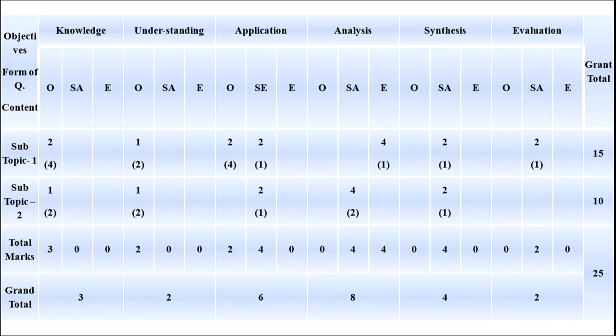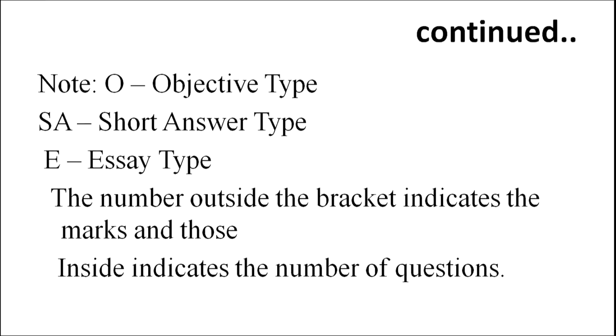What is a blueprint? A blueprint is a three-dimensional chart giving the placement of objectives, content, and form of questions. Here is a blueprint in which questions, number of questions, and marks are distributed. The abbreviation O stands for objective type questions, SA for short answer type, and E for essay type. The number outside the bracket indicates the marks, and those inside indicate the number of questions.